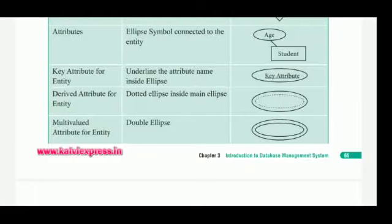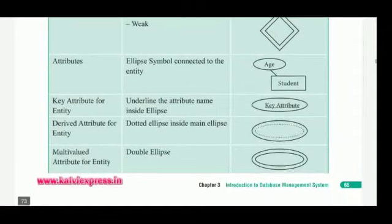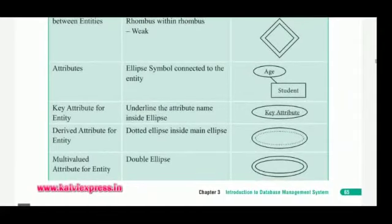Next are Key Attributes for an entity. For key attributes, we underline the attribute name inside the ellipse. That is the notation for key attributes.